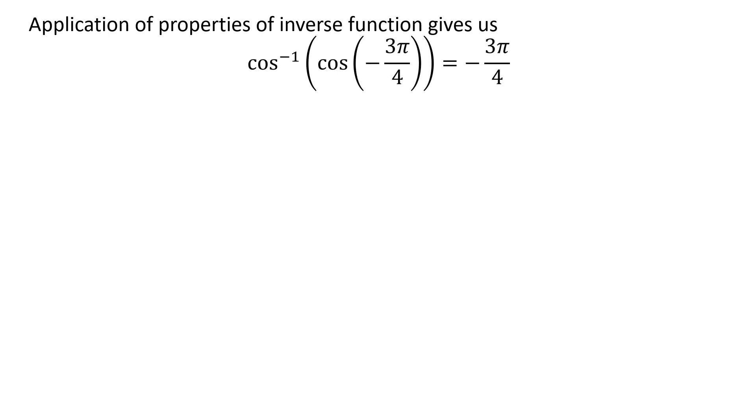As per the properties of inverse function, inverse of cosine of cosine of minus 3 times pi upon 4 is equal to minus 3 times pi upon 4.